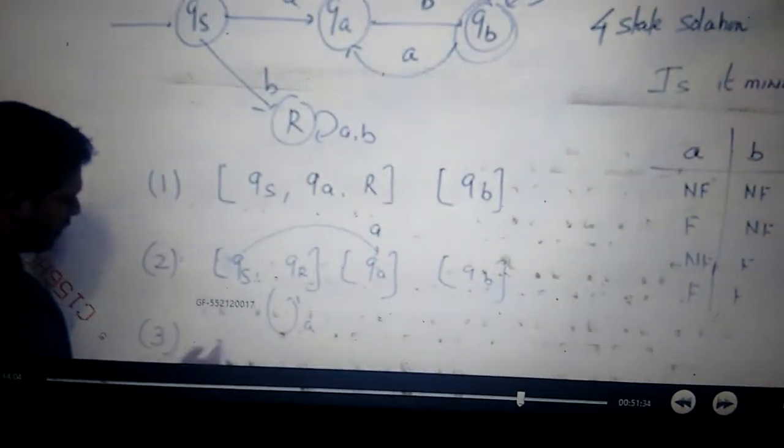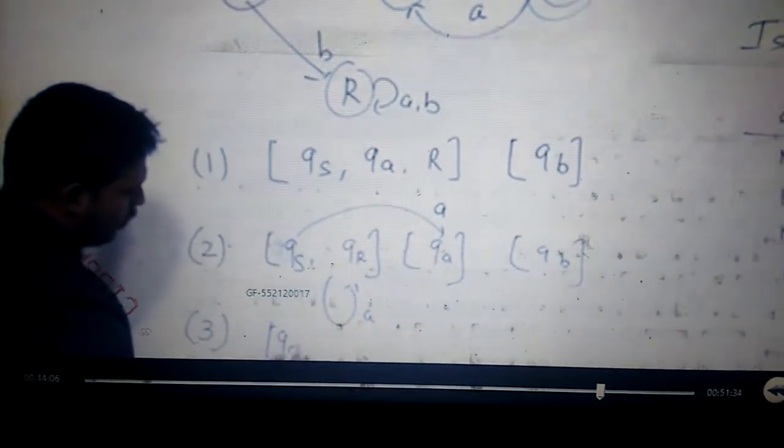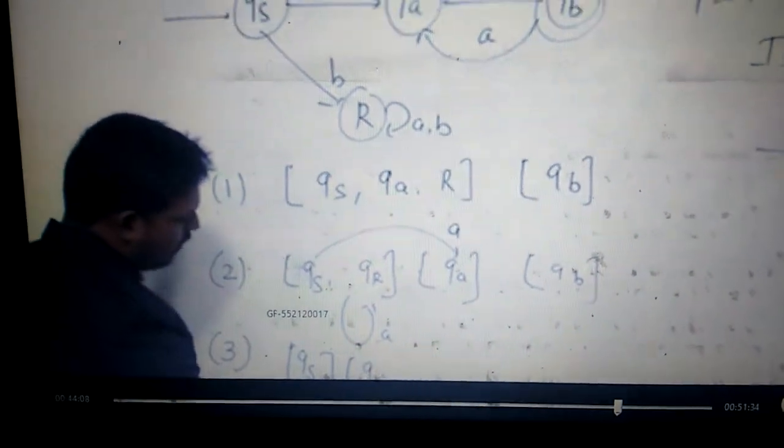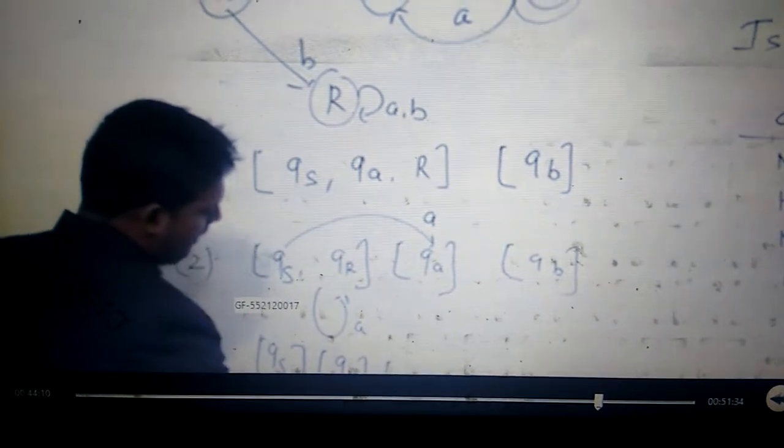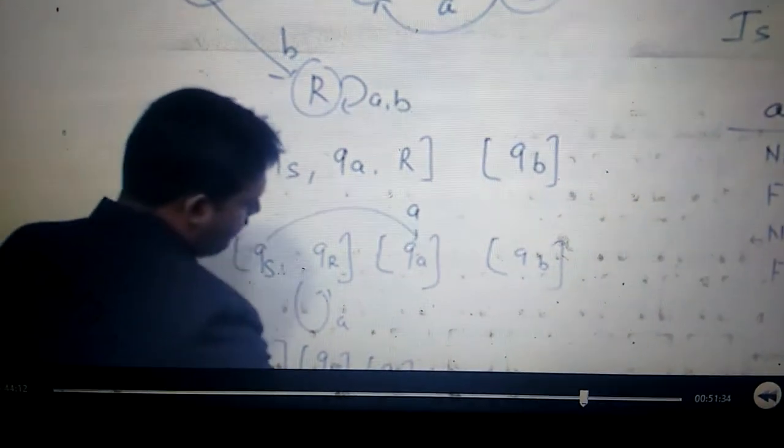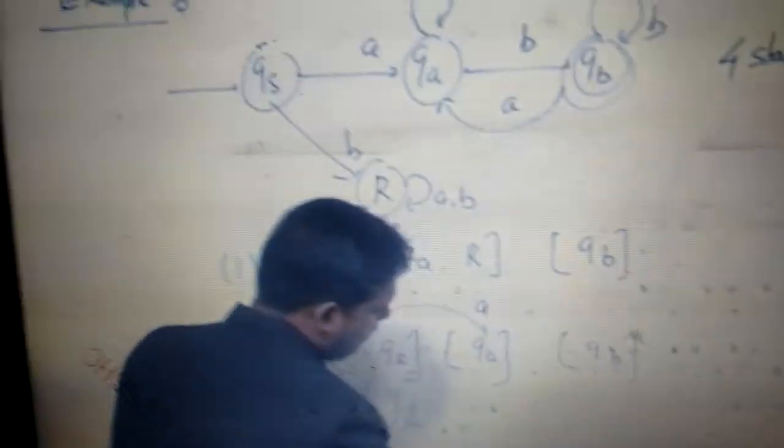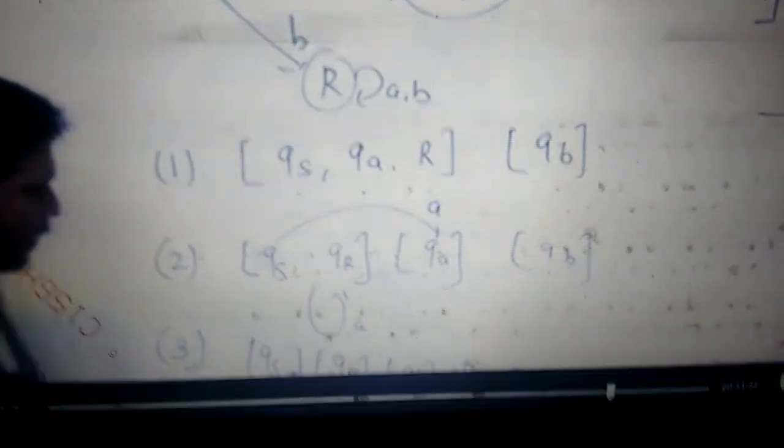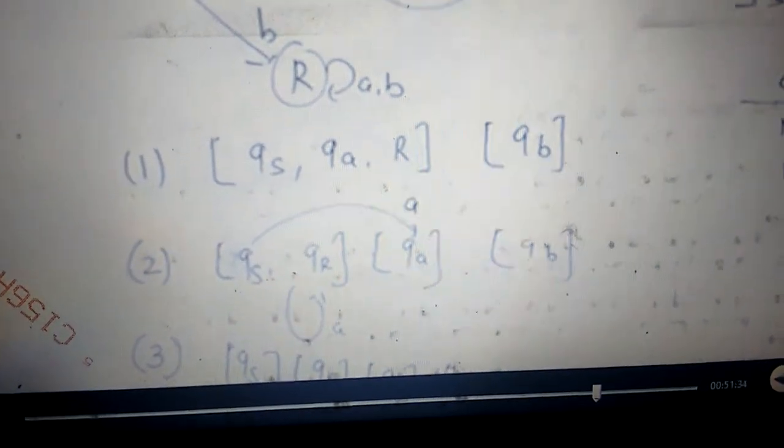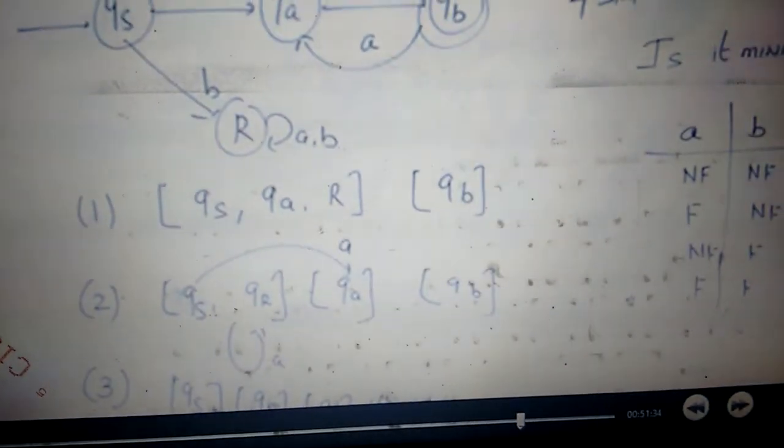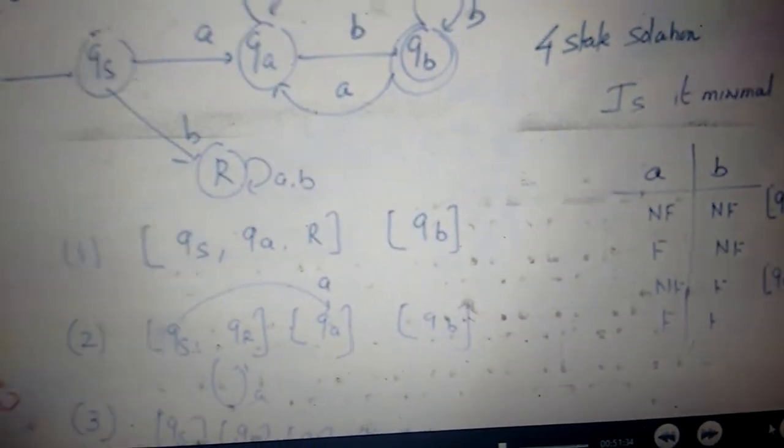So in the third partition will come QS, QR, QA, and QB, all are separated. We started with four, four state is a minimal solution.